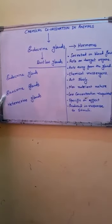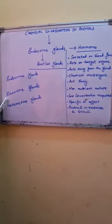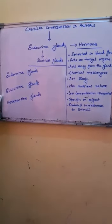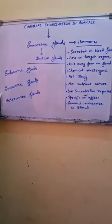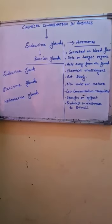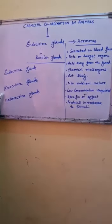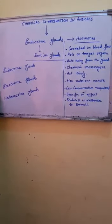Some glands are called exocrine glands. Exocrine glands are glands which drain out their secretion through ducts. These have specific ducts which release their secretion to a specific place. Examples of exocrine glands are gastric glands, milk glands, sweat glands, etc. These have their ducts which release their secretions at a specific place.